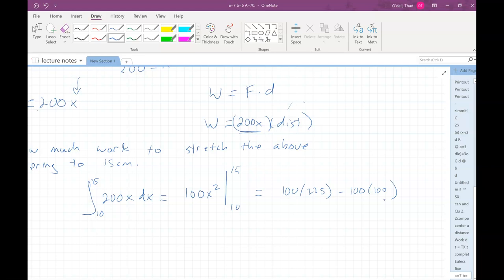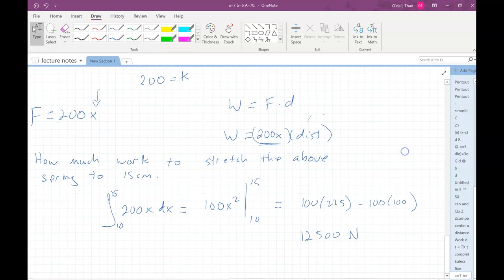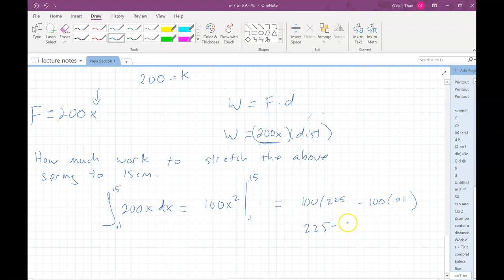And then we'd have 100 times 225 minus 100 times 100. But back up - remember we said that we had to be in meters. So really we want to go from 0.1 to 0.15. So then this would be 2.25 and this would be 0.01. So then that would be 225 minus 1, so 224 Newtons.